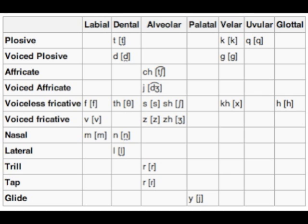The next one is the uvular plosive, which is a bit more difficult. It's done way at the back of the throat, near where the uvula hangs down. If it sounds like there's a lot of breath in there, don't worry — in Dothraki, just as in English, aspirated stops can be used in the same place as unaspirated stops. Think about 'pin' and 'spin' — the P's are done differently, with a little burst of air. It's the same with the uvular — it's allowed to be aspirated.